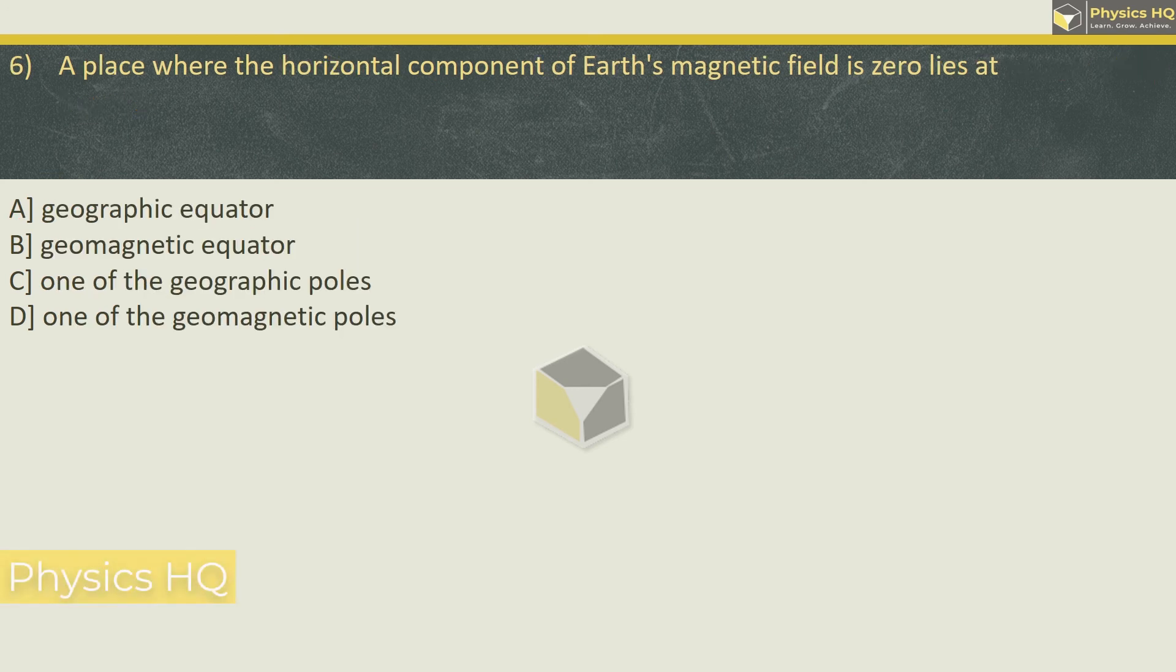Next MCQ: a place where the horizontal component of the earth's magnetic field is 0, it will lie where? It lies on one of the geomagnetic poles. This one has been discussed earlier. Let me explain.